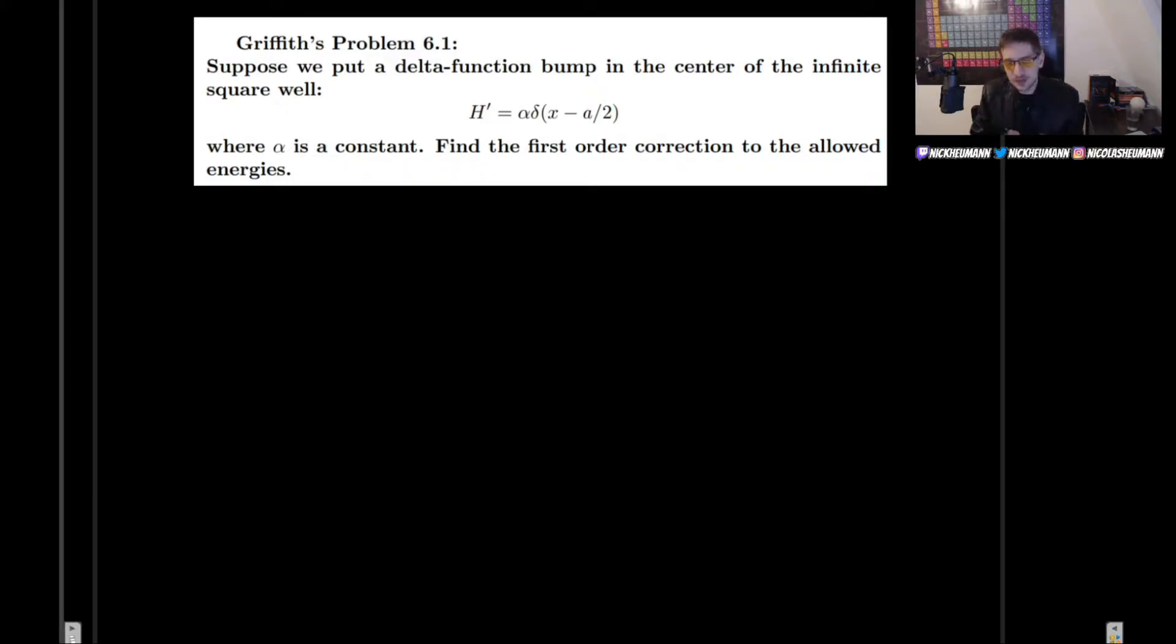So this is our first problem in perturbative theory in quantum mechanics. And what is going on here is that we have a system that we know, which is the infinite square well. We know its wave functions, we know its energy levels. And now we add a slight change to the Hamiltonian. We have now this small perturbation, which is in the form of a delta function. So how do we deal with this?